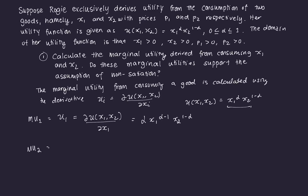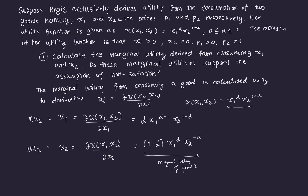For good two, it's a similar process. U2 equals the partial derivative of the utility function with respect to X2. The exponent of X2 is (1−α), so we bring down (1−α): MU2 = (1−α) · X1^α · X2^(1−α−1) = (1−α) · X1^α · X2^(−α). That's the marginal utility of good two.